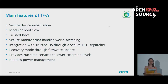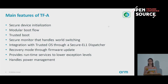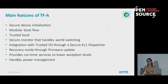It has a modular boot flow where the firmware is divided into several images: the ROM firmware, RAM firmware, and a persistent RAM firmware that provides runtime services. You don't have to use all of these images — you can pick some of them and potentially replace others with your own implementation. It supports trusted boot, where every firmware image authenticates the next one before executing it, so you build a chain of trust from the very first piece of firmware.